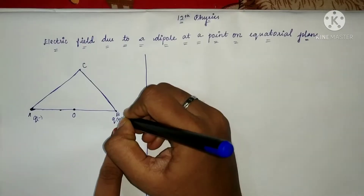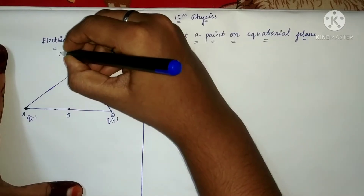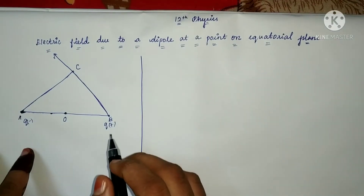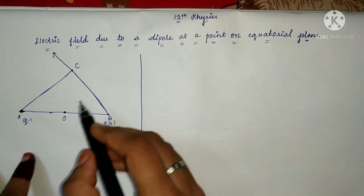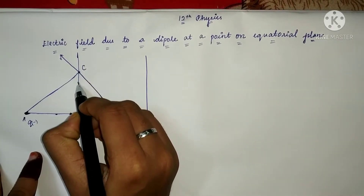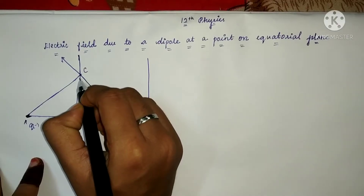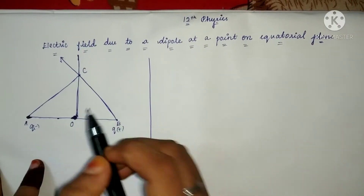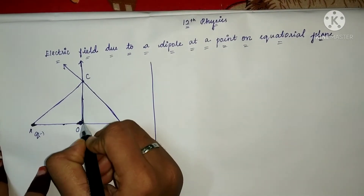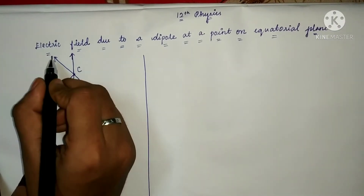Now we will see the electric field. The charge is positive, so the radial field is outward. We look at the horizontal component and the vertical component. For the positive charge, the radial is outward. This is the horizontal component, this is the vertical component, and this is the radial component.